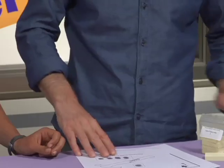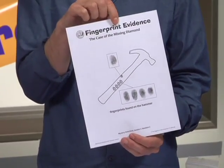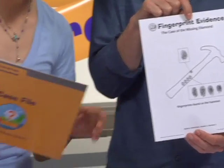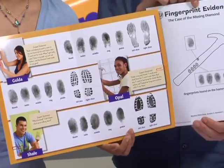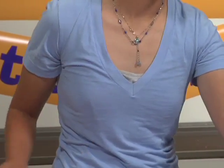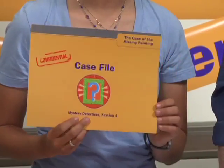After the kids share their inferences, the leader passes out the fingerprint evidence sheet. In this case, it shows fingerprints found on a hammer at the scene of the crime. The kids try to match these prints with the prints of the suspects. During Make Sense, the children try to solve the mystery. The other mysteries in the kit are the case of the bicycle crash, the case of the missing money, and the case of the missing painting. All the mysteries are set up a lot like the one we're showing you right here.